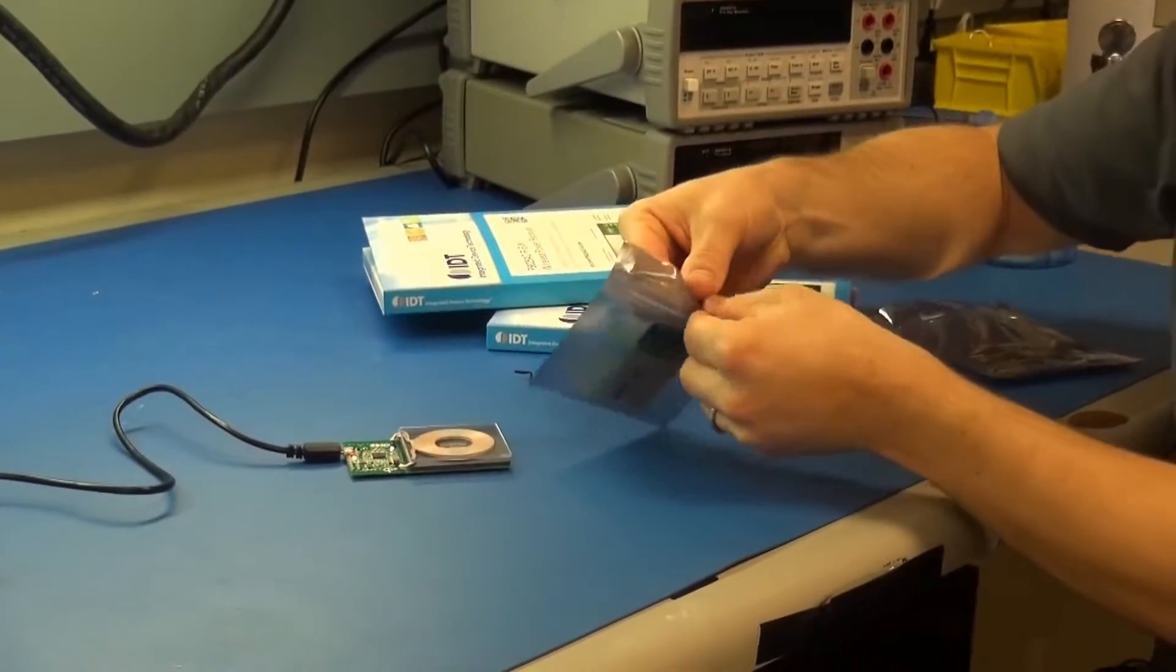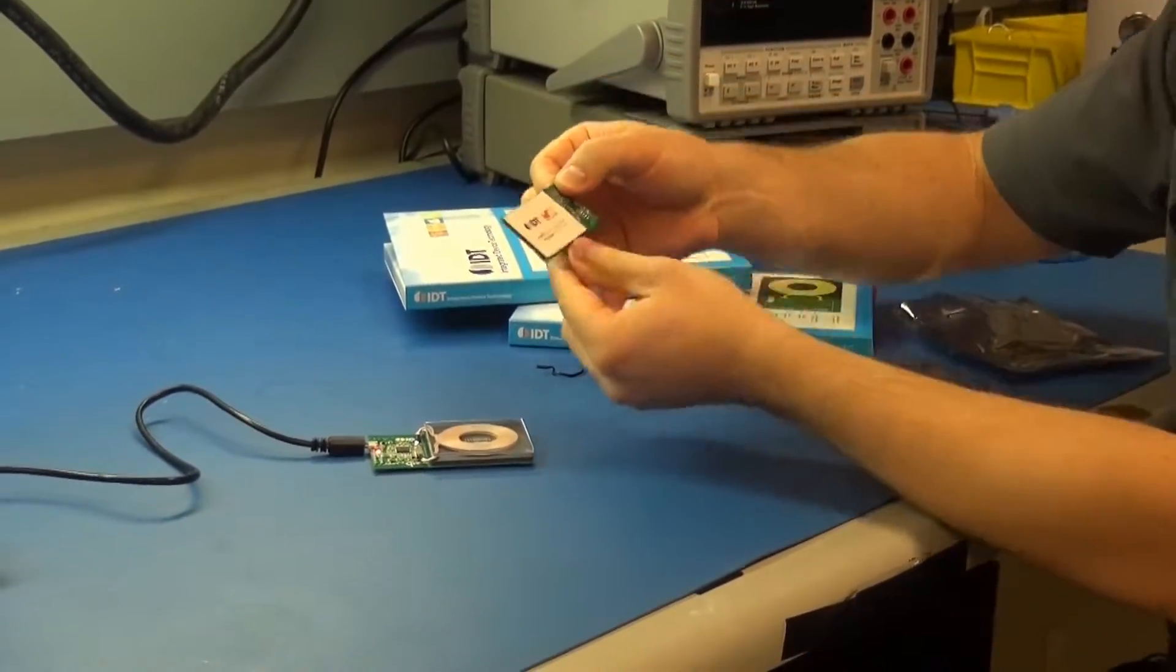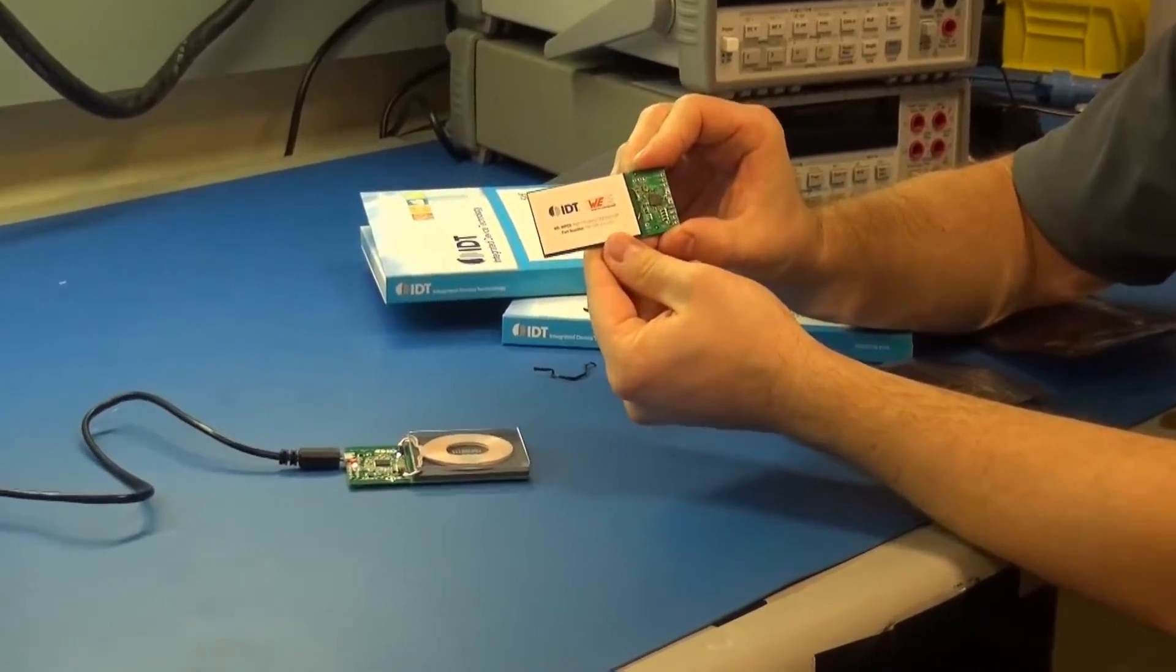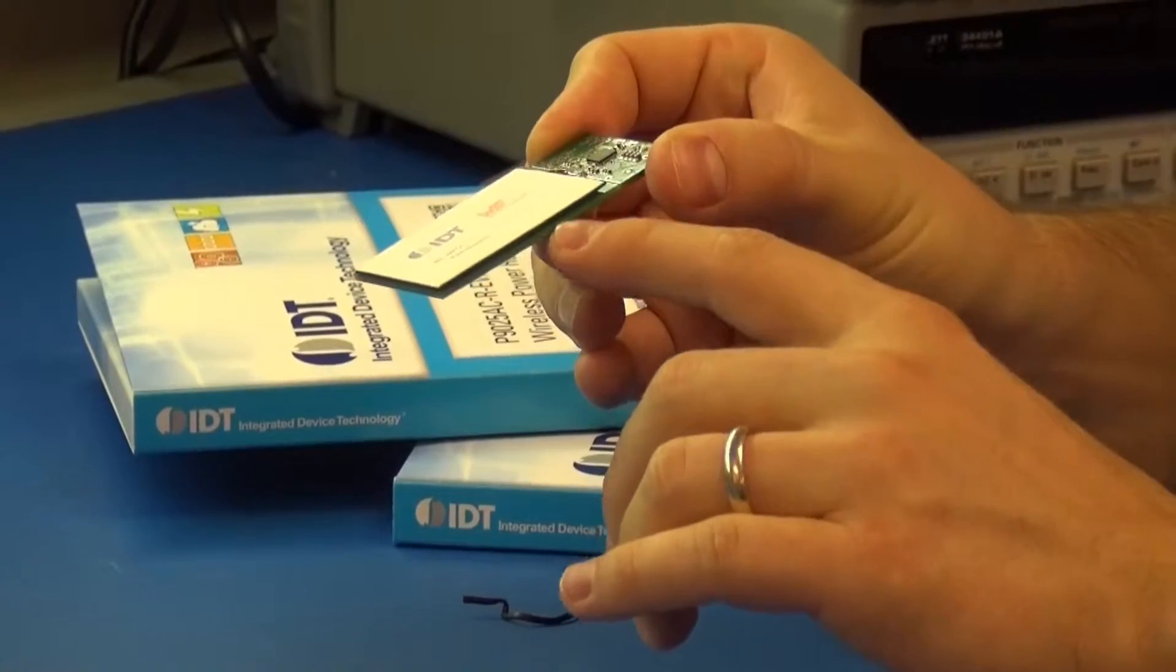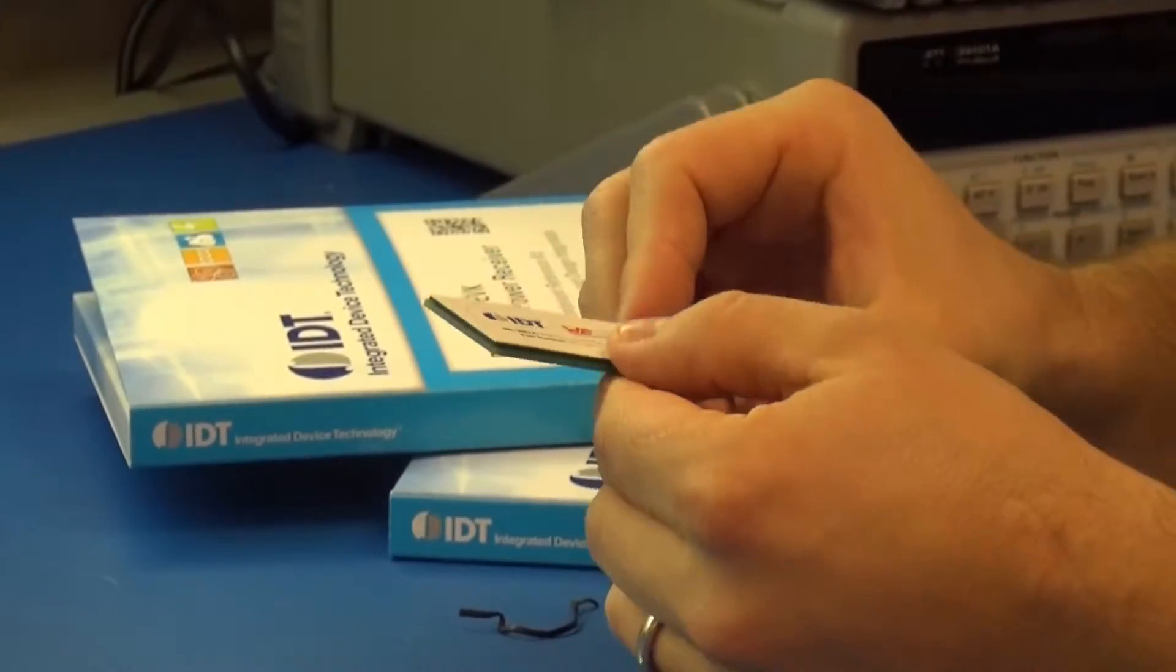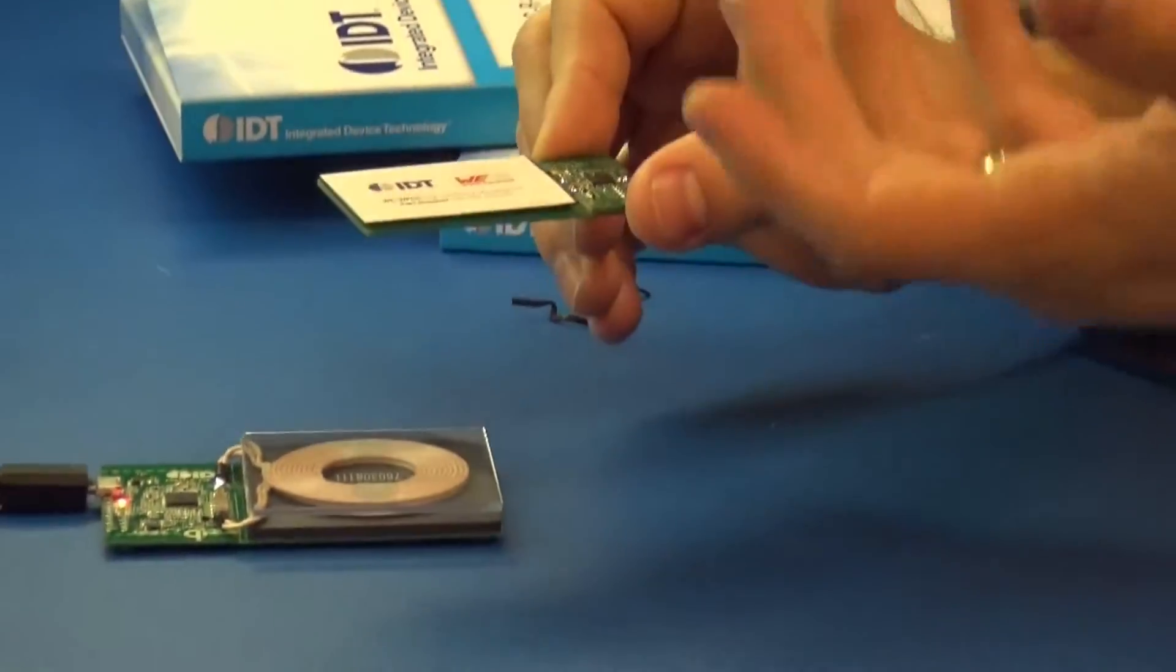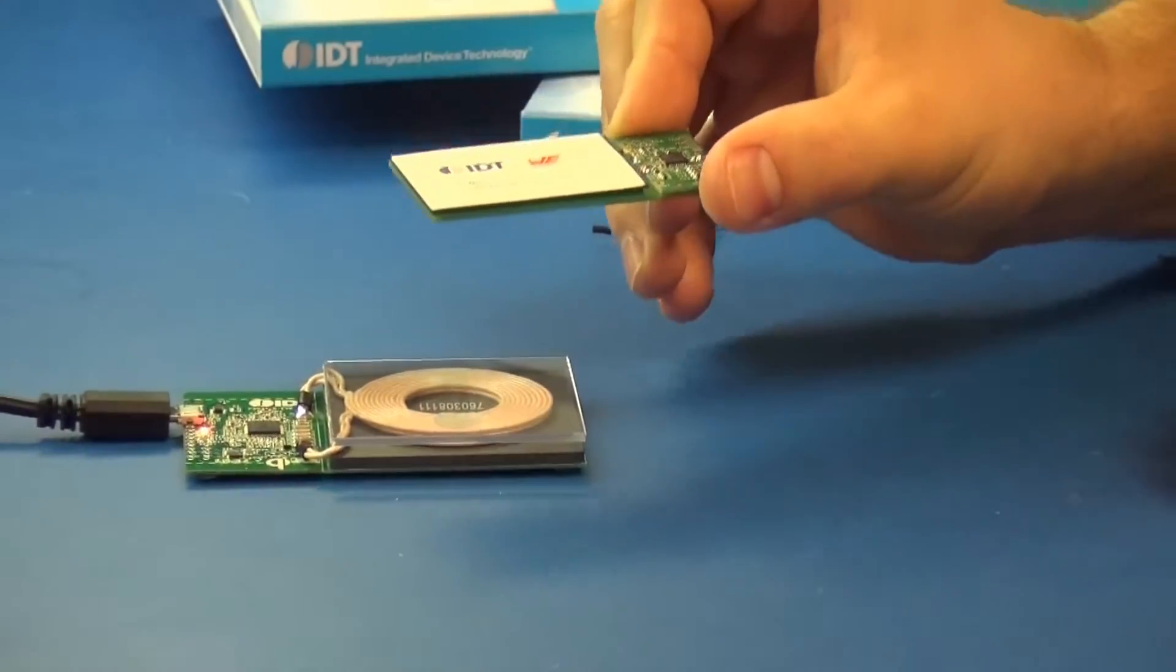Take your wireless power receiver board out. The coil for this board is here, and it's been flipped over because we're using the board as a spacer. So, you'll want to place this on your transmitter with the logo and the circuitry facing up.